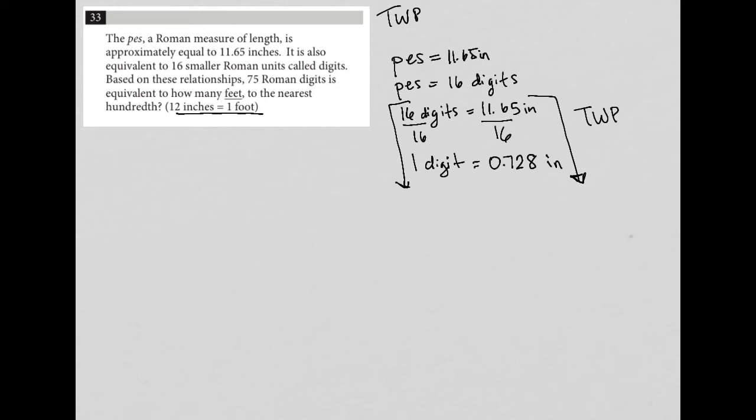So what we're really doing here is saying 75 digits to feet, but I don't have digits to feet. So one digit is 0.728. So 75 digits would just be 75 times 0.728.